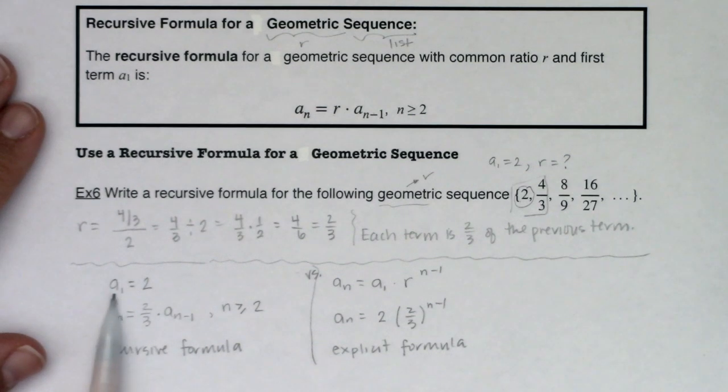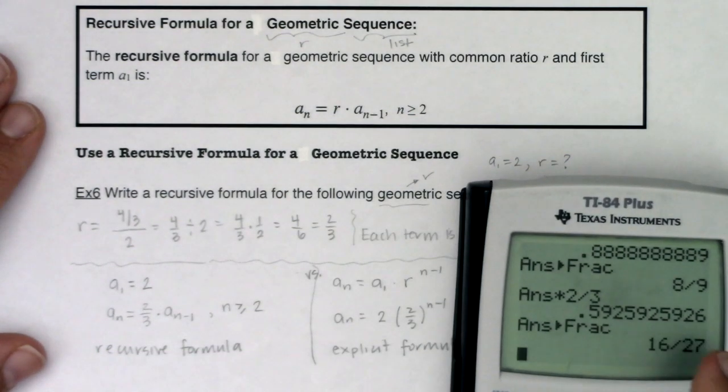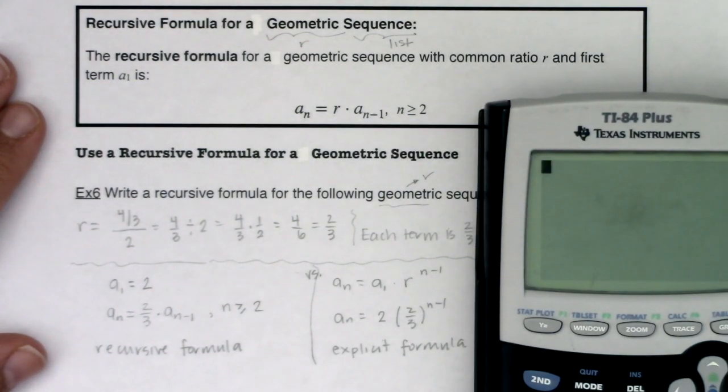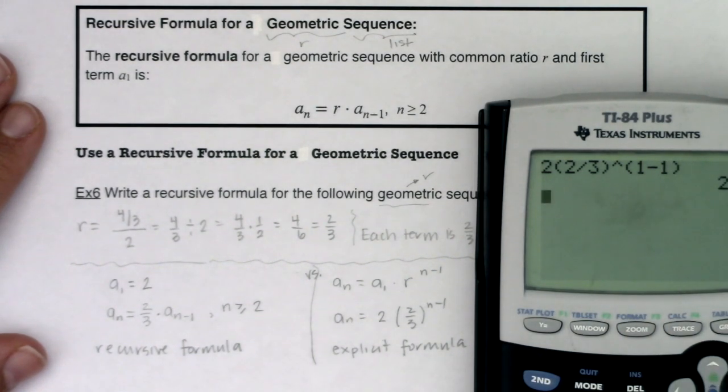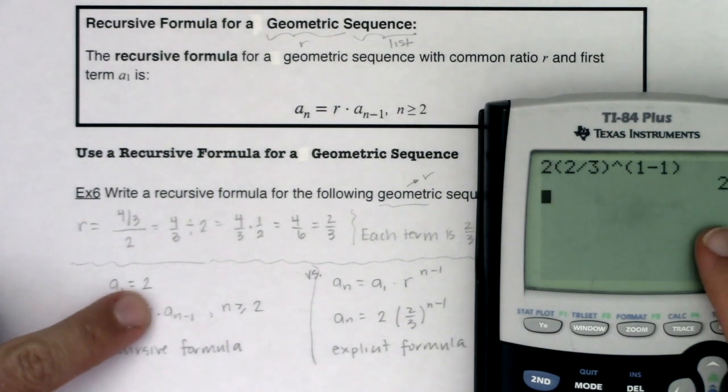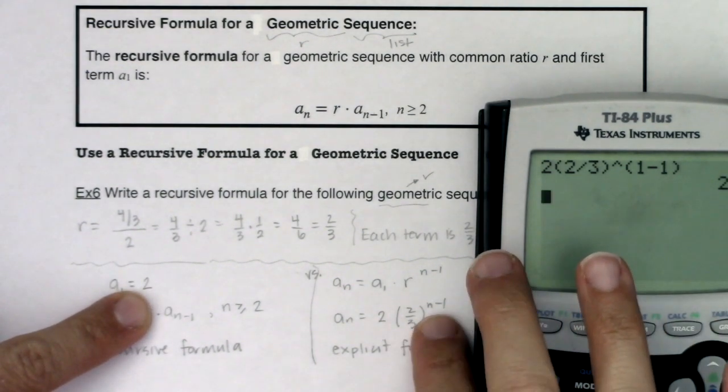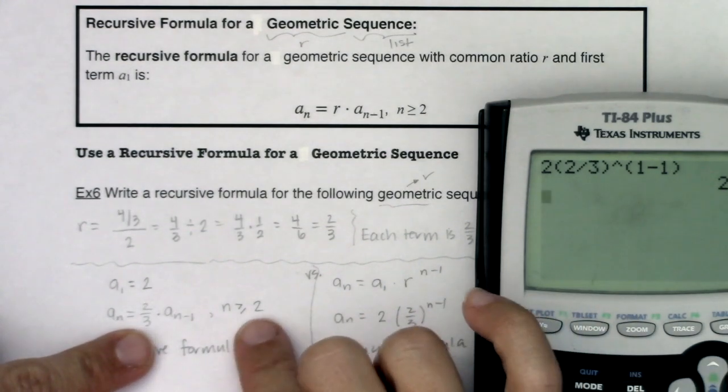If I was going to go with the recursive formula and find a sub 1, a sub 1 is just 2 because it says it right there. If I was going to go with the explicit formula and find a sub 1, this would be 2 times 2 thirds to the 1 minus 1. So let's plug that into our calculator just so we can see it working. So both ways I'm popping out of 2, either with the recursive formula or the explicit formula with n being 1.